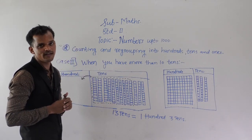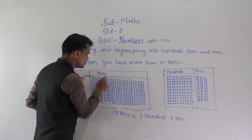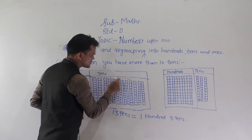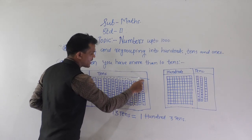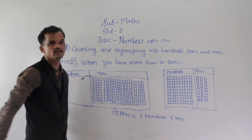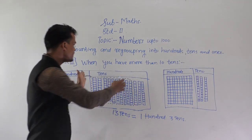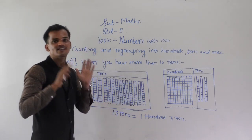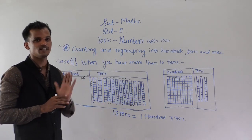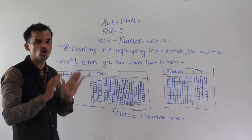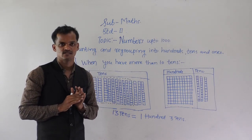Count how many 10s are there: 1, 2, 3, 4, 5, 6, 7, 8, 9, 10, 11, 12, and 13 tens are there. So in the 10s column there are 13 tens. The next step is that we know 10 tens equals 1 hundred.